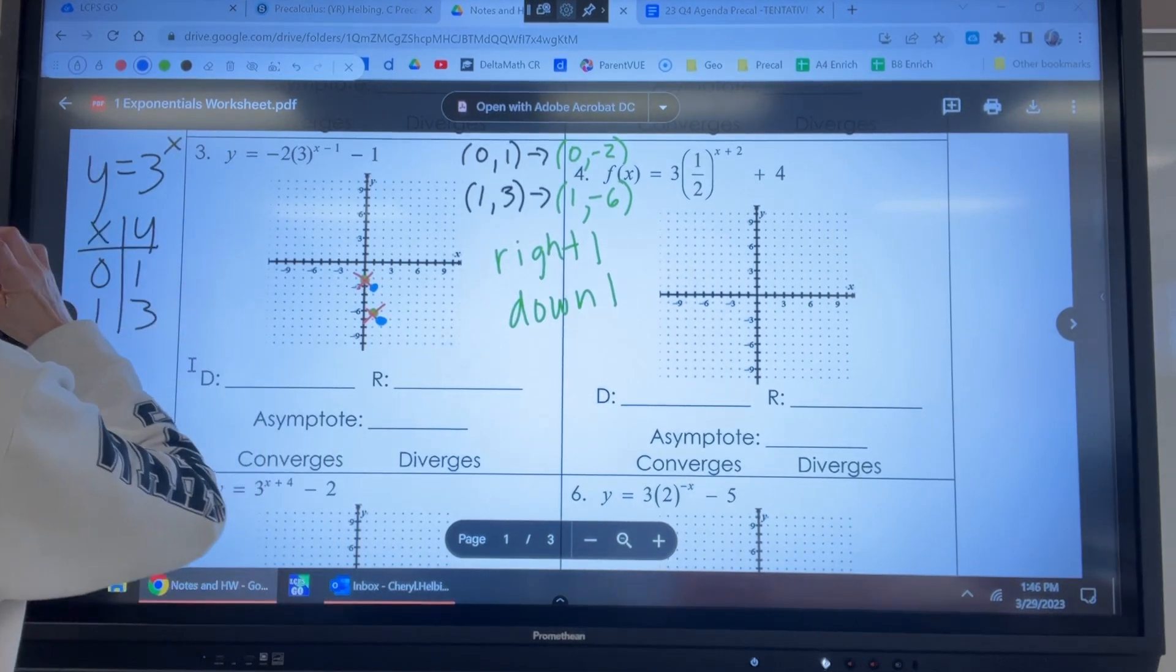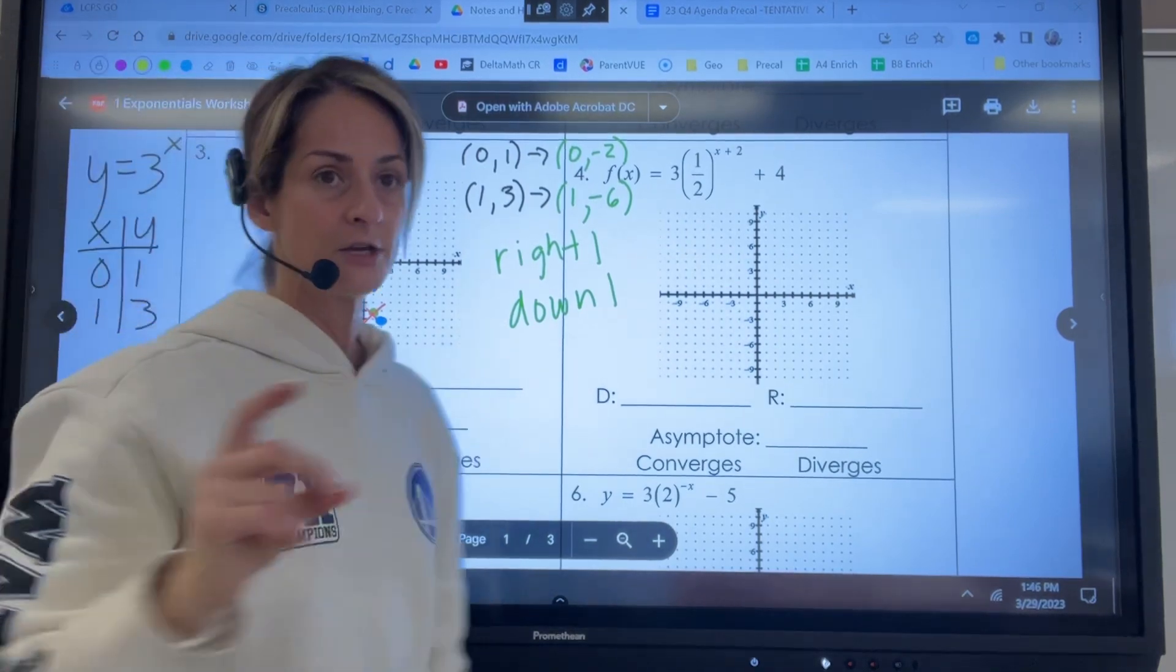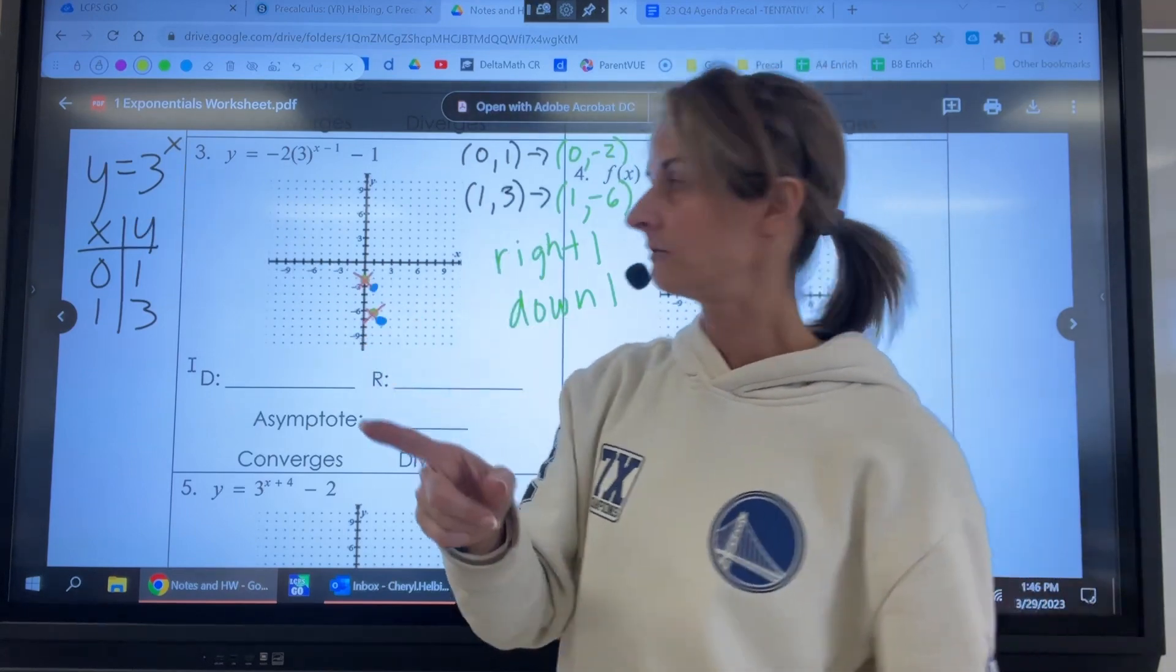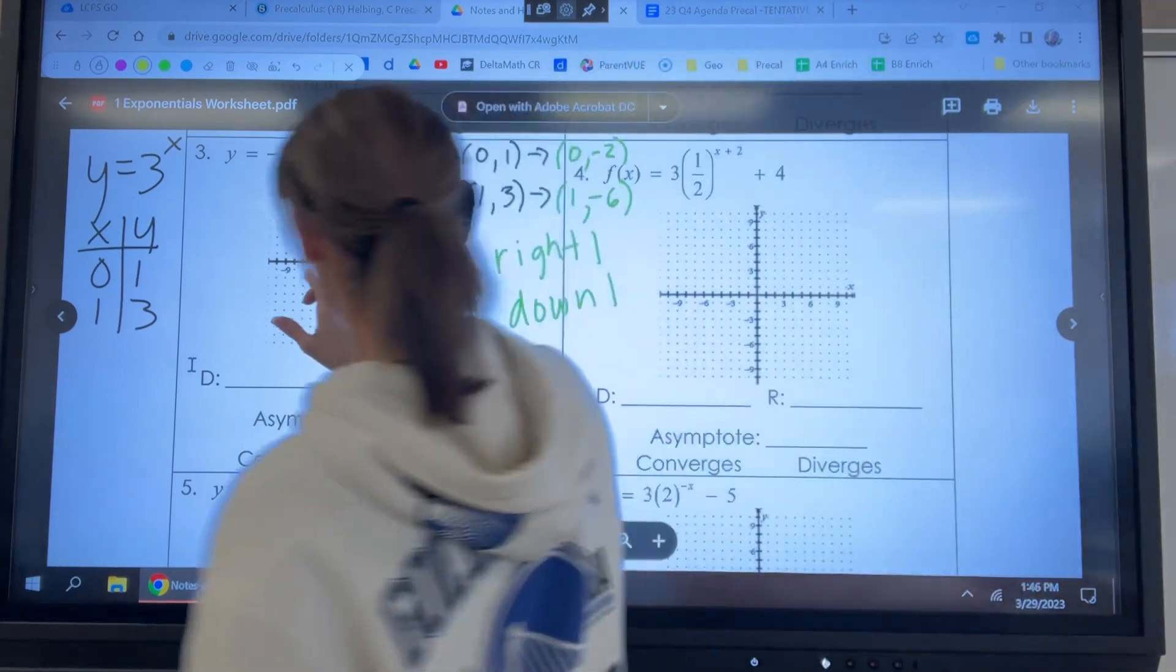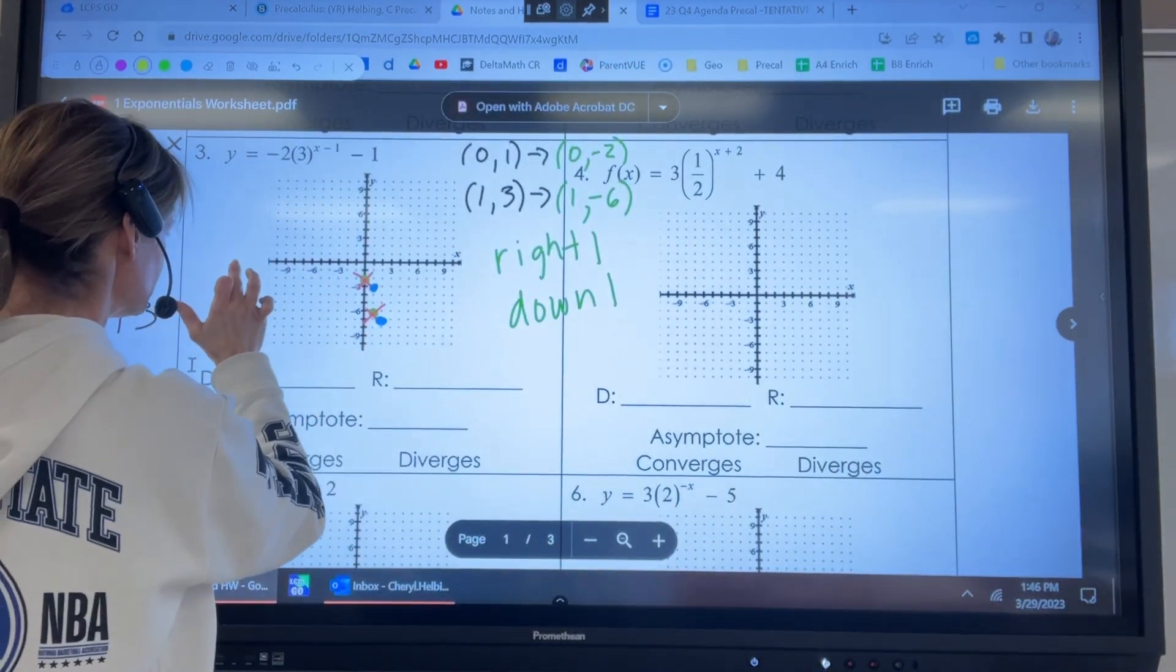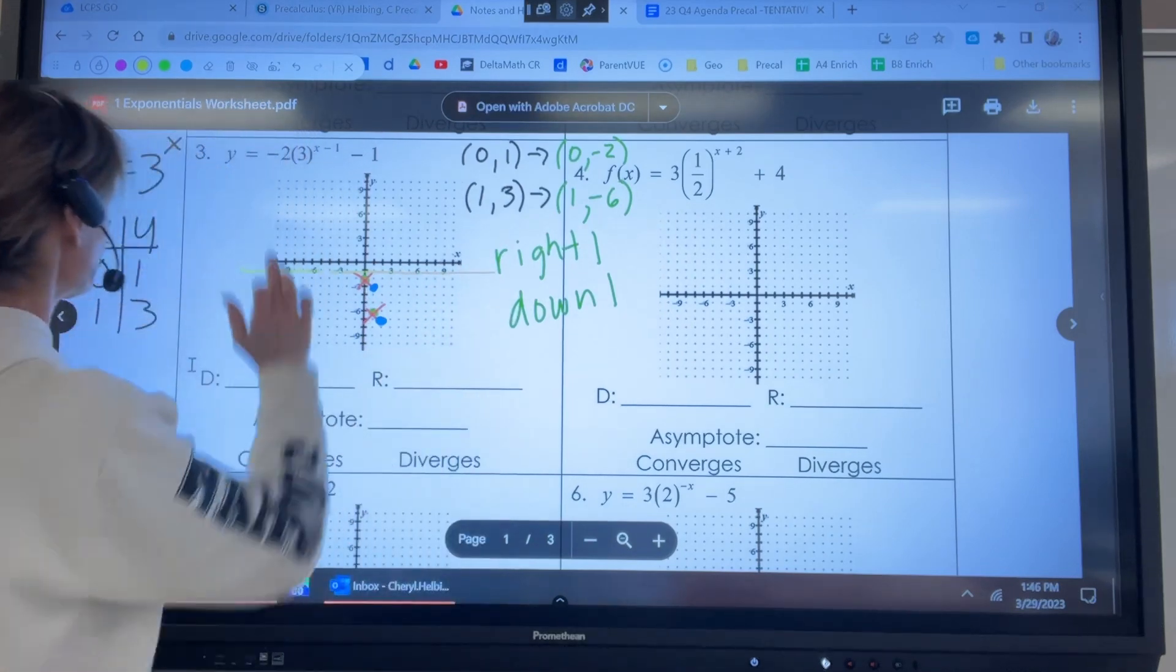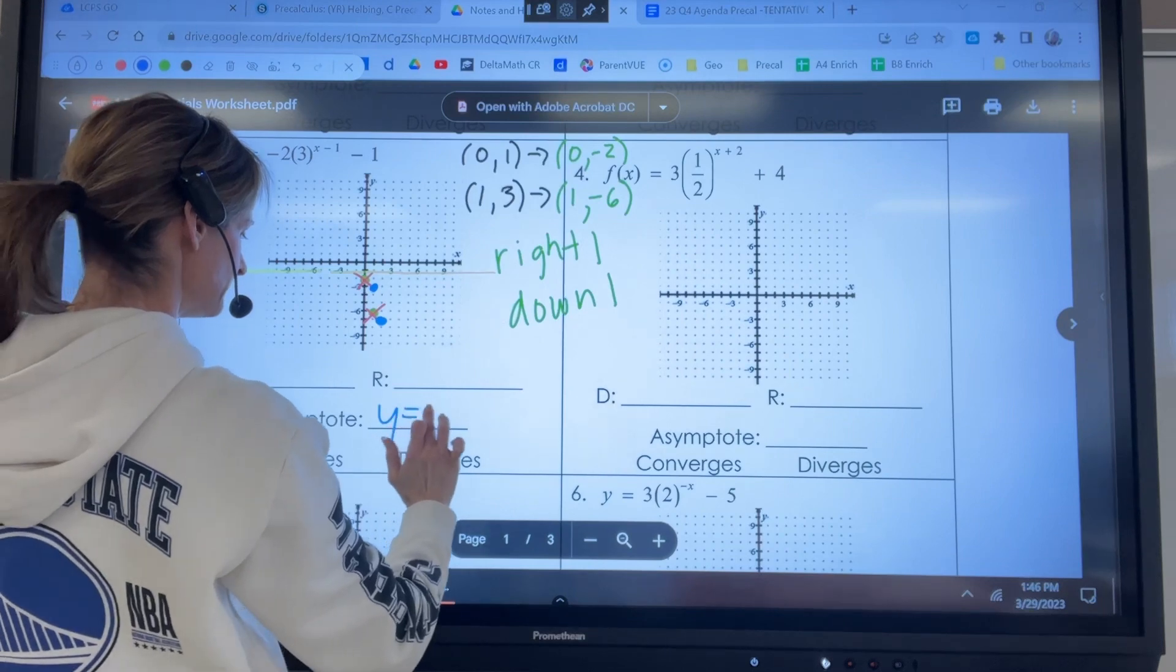Now I forgot to draw the asymptote. Usually I draw the asymptote first, but that's okay. So where's the original asymptote? We kind of just went through that. Zero. Okay, so where's it going to be now? Negative one. Yep. So here we go. Y equals negative one. And we can write that in. Y equals negative one. And now we just draw our graph.